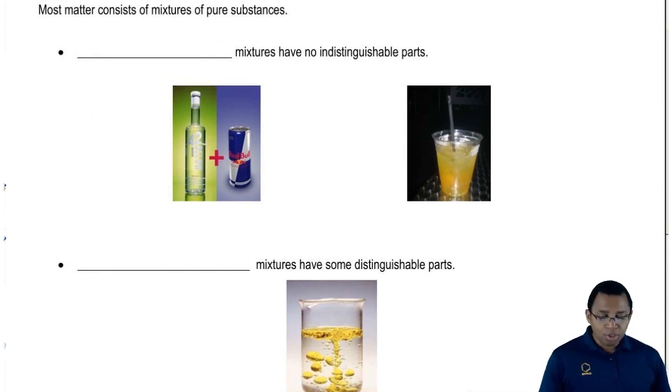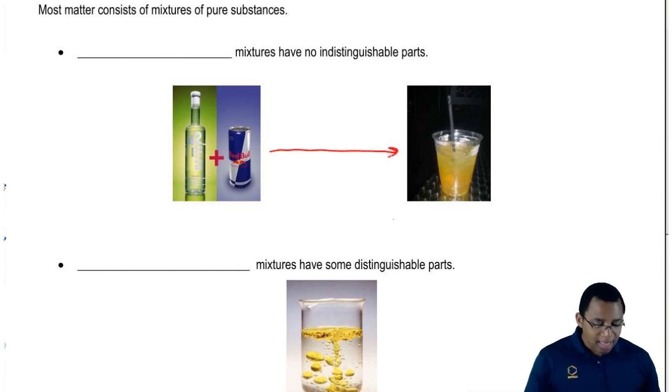We're going to say blank mixtures have no indistinguishable parts. This first type of mixture basically means when I mix them together, I can't tell which part is which. A good example here is if we have Red Bull and Vodka. When we mix these two things together, they give us this pale yellow solution here.